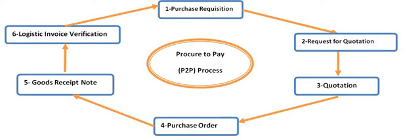The second stage of the P2P cycle is the Request for Quotation, generally called RFQ. The purchasing or MM department of a company sends the RFQ to all vendors for the best prices. For example, if I am going to procure a material, I need to send this RFQ to all vendors working in this field. The RFQ can be sent manually or with respect to a purchase requisition.